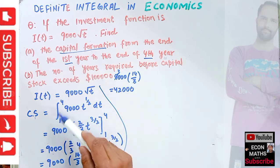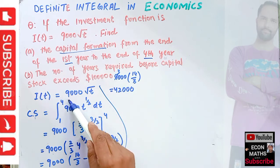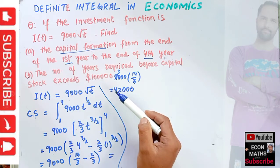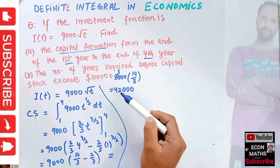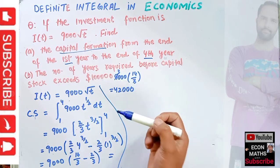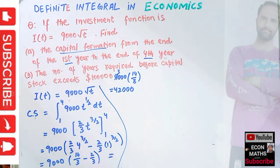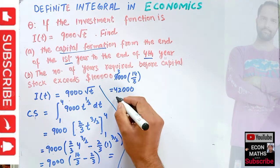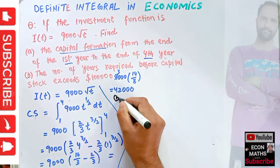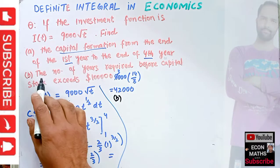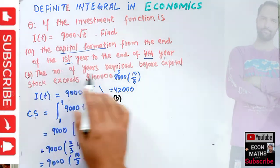Calculating 9000 times 14/3 gives us 42,000. So the capital formation from the end of the first year to the end of the fourth year is equal to $42,000. This completes the first part.